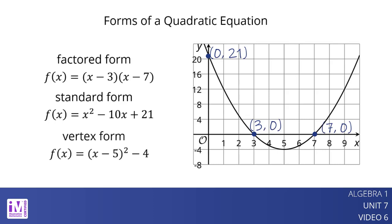From vertex form, we can tell that the vertex is (5, -4).